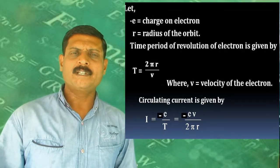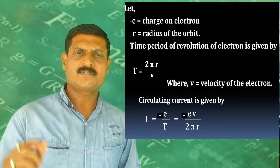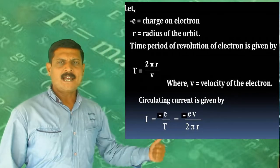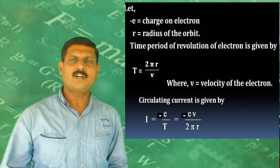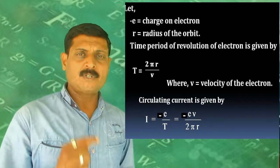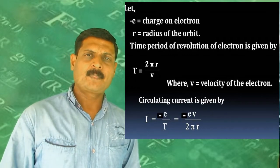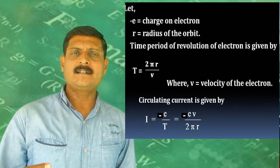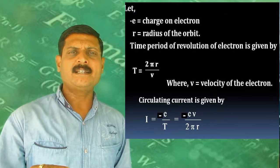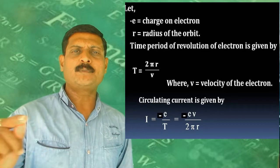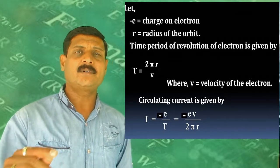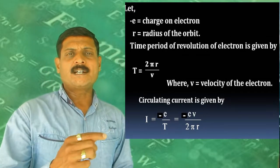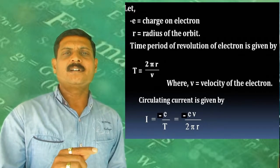The current flowing through the loop is I = charge/time, so I = -e/T, where -e is the charge on the electron and T is the time period of revolution. The time period T = 2πr/v, where 2πr is the circumference and v is the speed of the electron. Therefore, current I = -ev / 2πr.